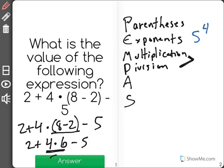And I know 4 times 6 is equal to 24. So now what we have is 2 plus 24 minus 5.